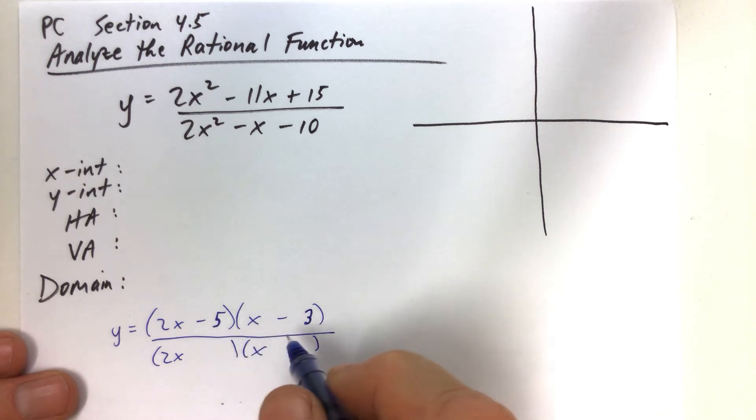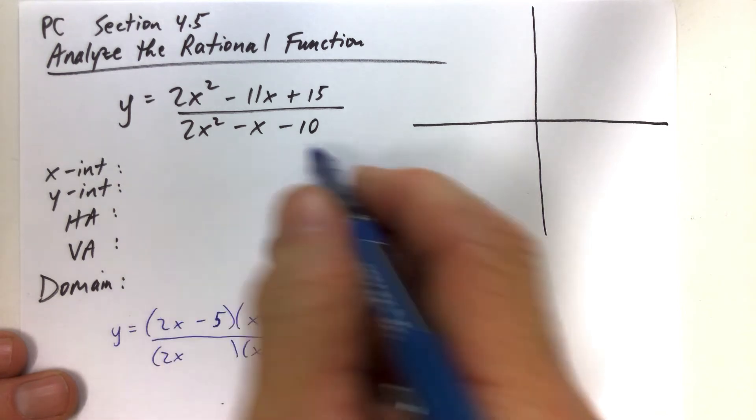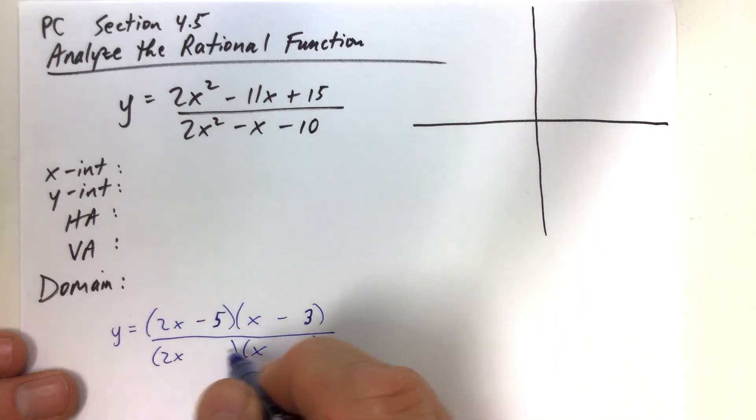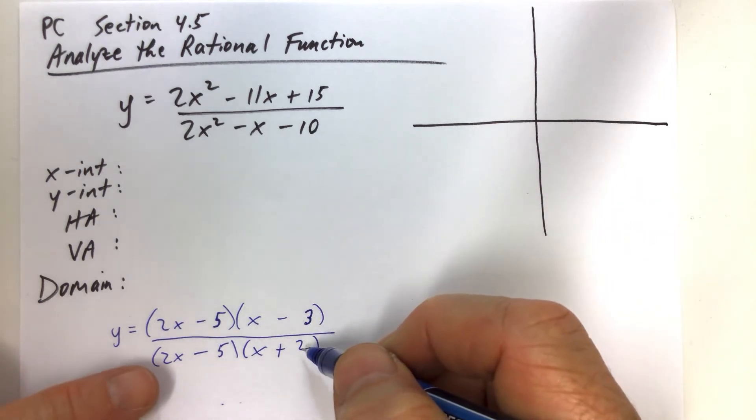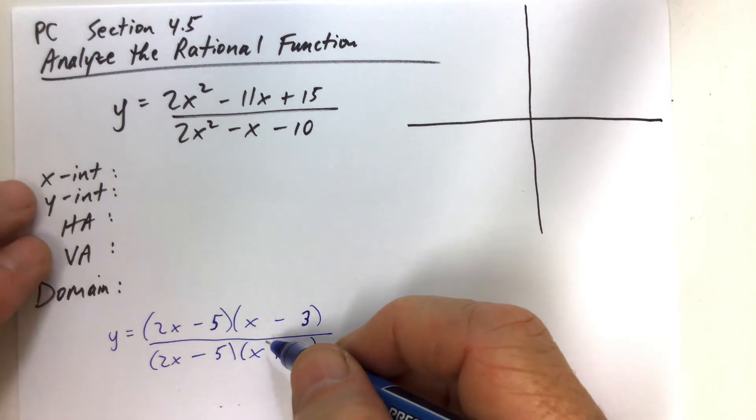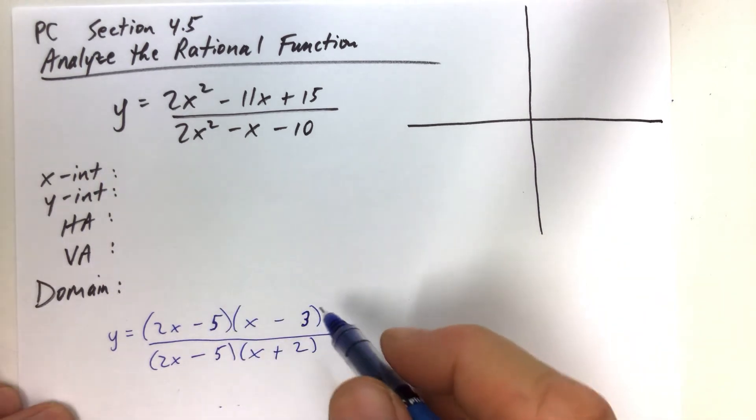And then for the denominator, I'm assuming that 2x minus 5 will be a factor in the denominator. So I'm just going to put that in and see if it works. So if it's negative 5 there, then it's going to have to be positive 2 there because negative 5 times 2 is negative 10. And let's check, so multiplying the outers together, 4x and negative 5x is negative x. So check.